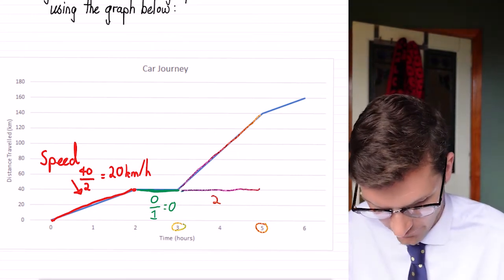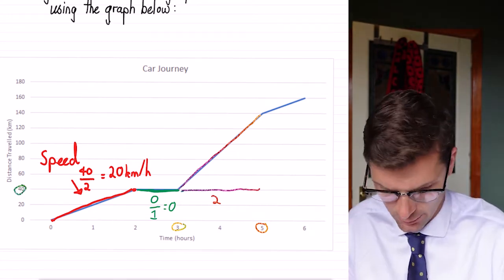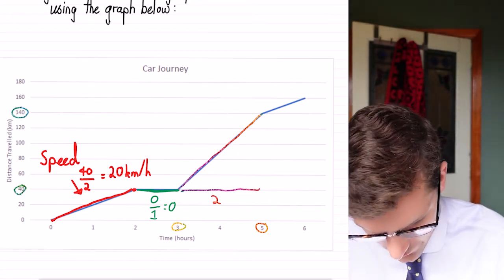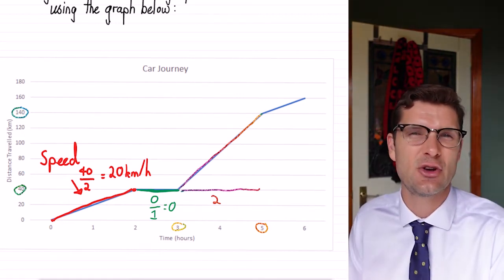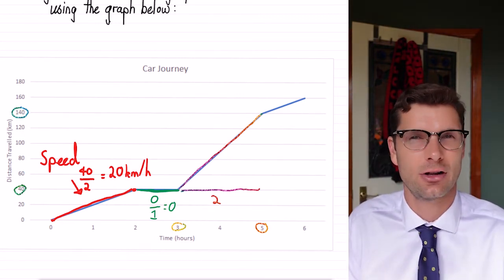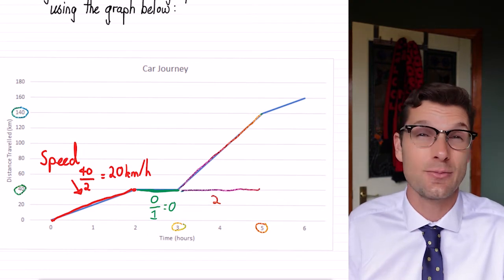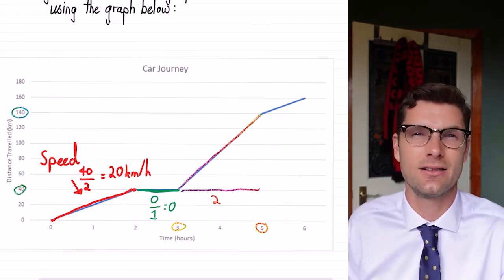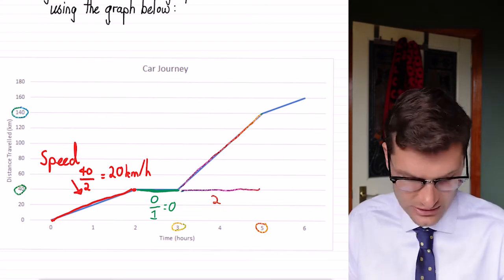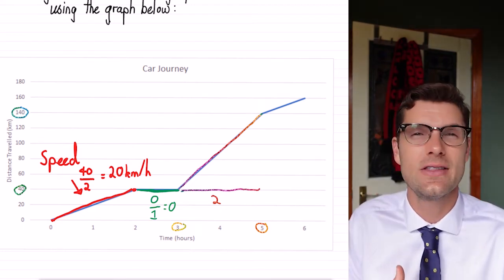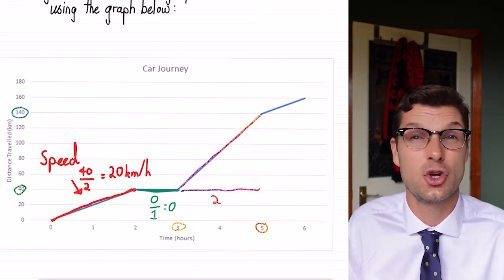Because we've started at 40 kilometers and we've finished here at 140 kilometers, in these two hours we've only traveled a hundred kilometers. My students sometimes make the mistake of saying, oh well, that's 140 divided by the two hours. But we just need to make sure that it's only the distance traveled in these two hours.